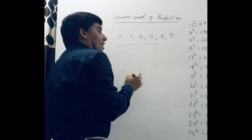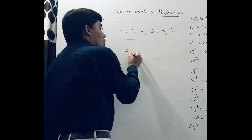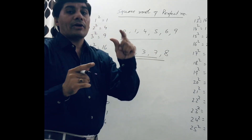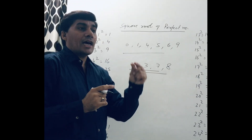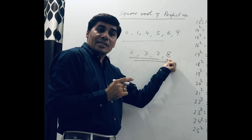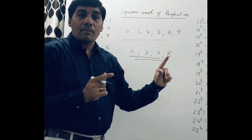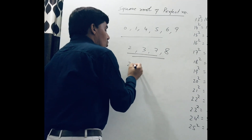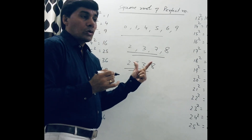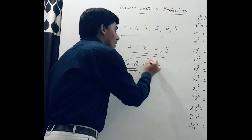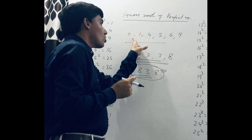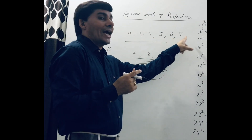That means we can say that a number having unit digit 2, 3, 7, or 8 is not a perfect square number. For example, 2838 — is it a perfect square number? No, because the unit digit of this number is 8. In a perfect square number, the unit place must be 0, 1, 4, 5, 6, or 9.